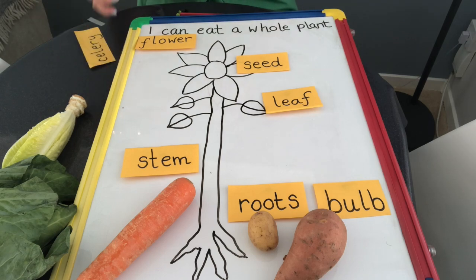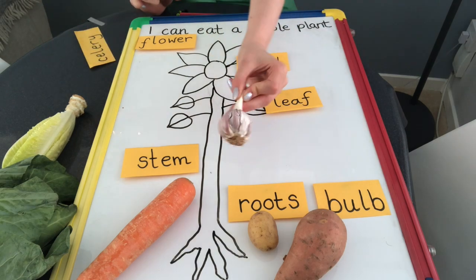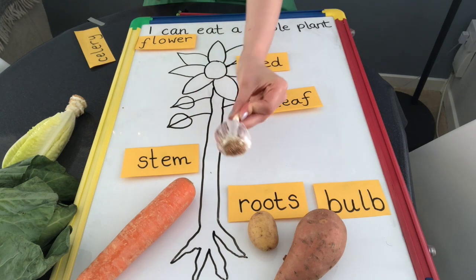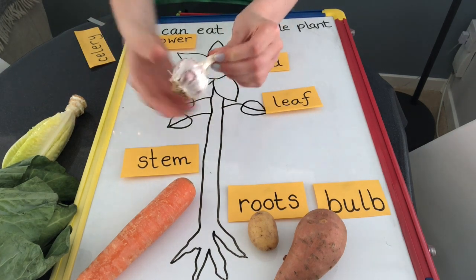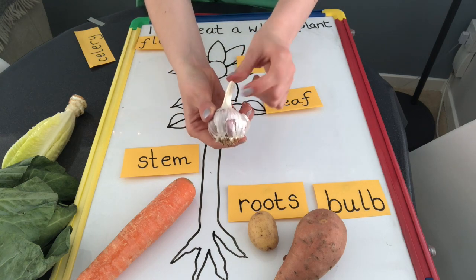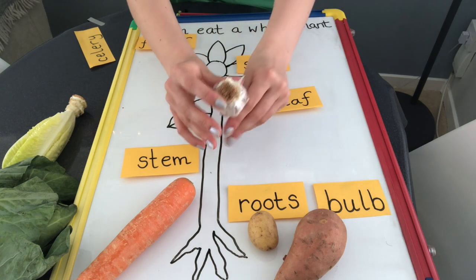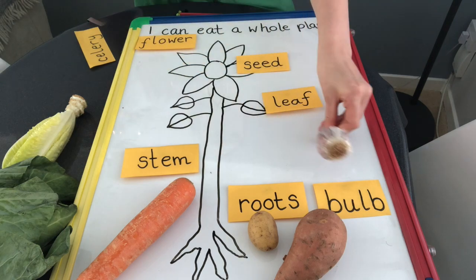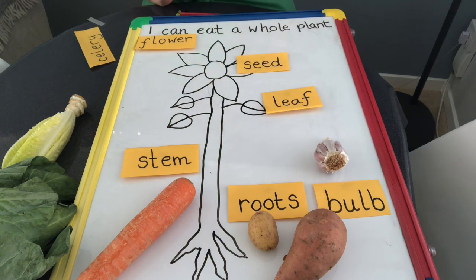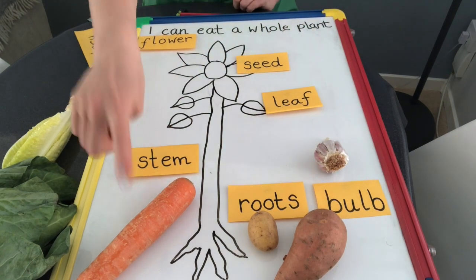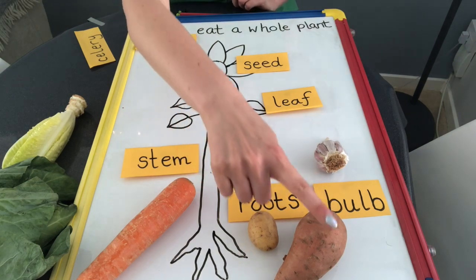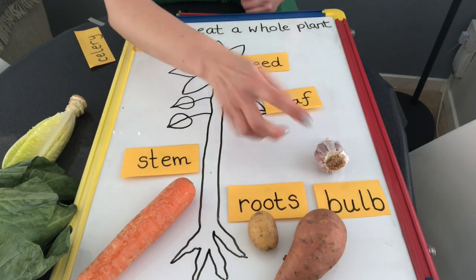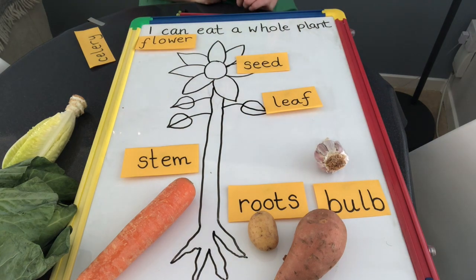Next we have a bulb. Garlic is a bulb and onions are a bulb, and again they grow under the ground. This is the shoot where it grows above the soil and you can still see the roots on the bottom there. So we can eat carrots and potatoes and sweet potatoes — those are the roots — and we can eat garlic and onions, those are bulbs.